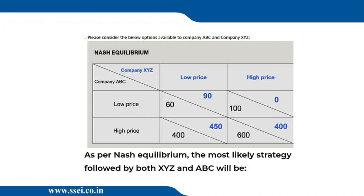When we decide for ABC, case one: XYZ will maintain a low price — we are thinking column-wise. Look at the two profit figures, the black figures for ABC: they are 60 and 400. Which is higher? 400. So if XYZ charges a low price, ABC will charge a high price.